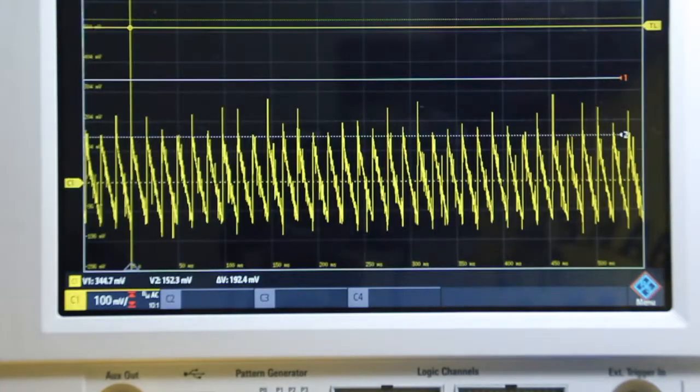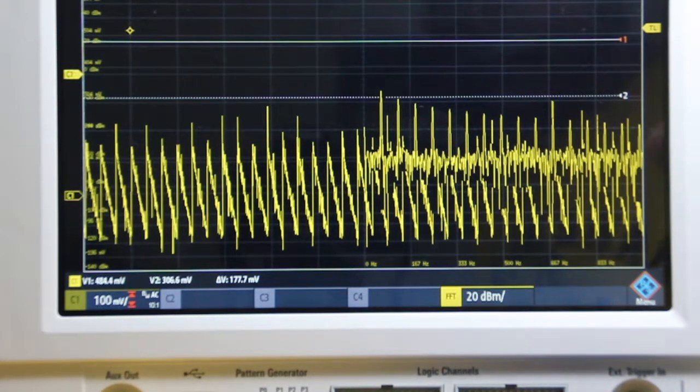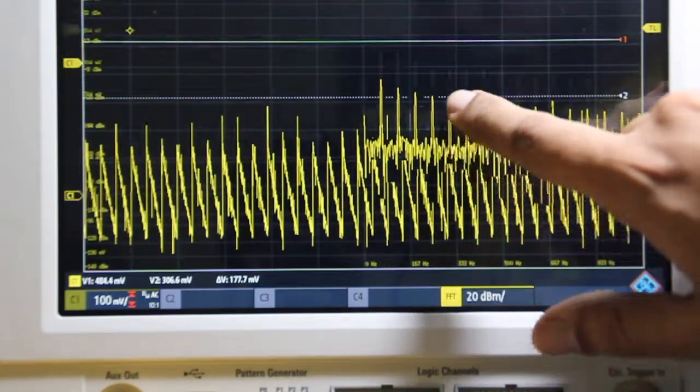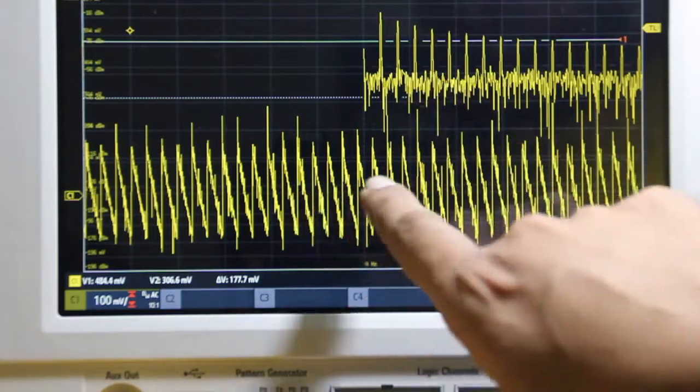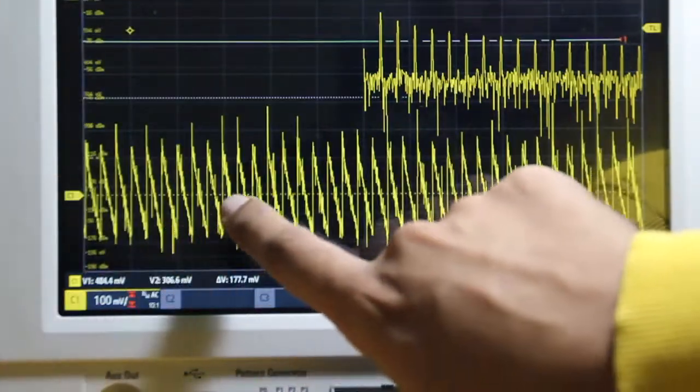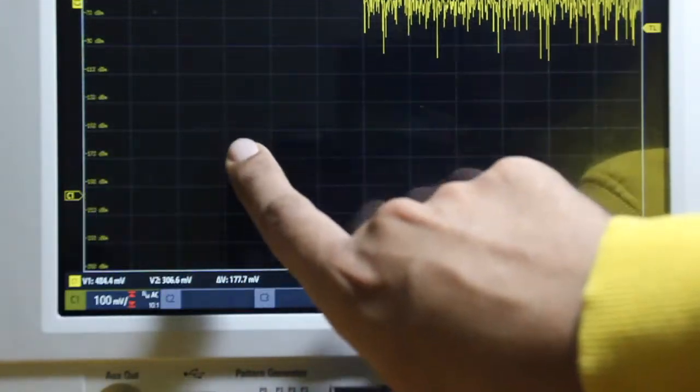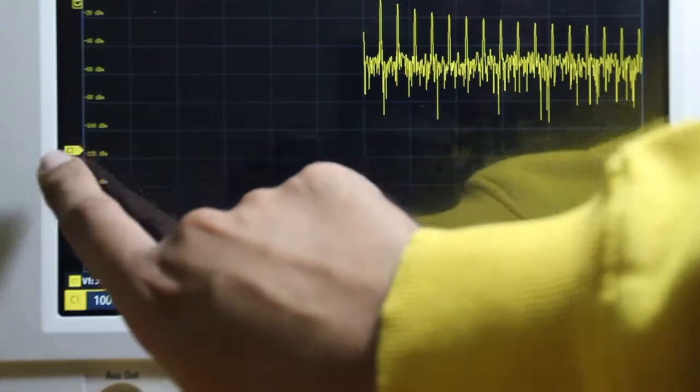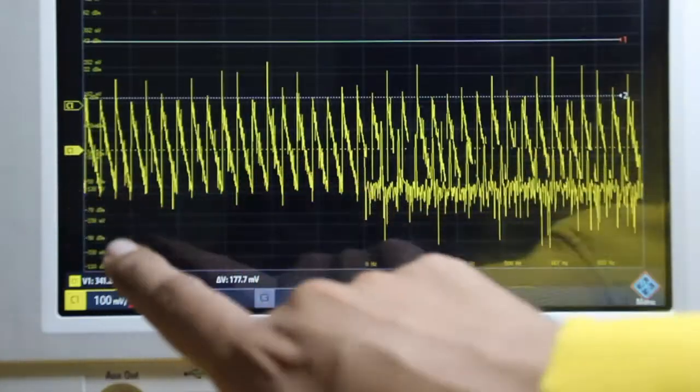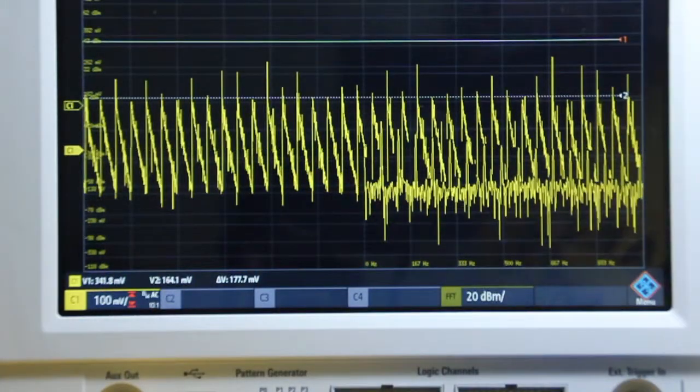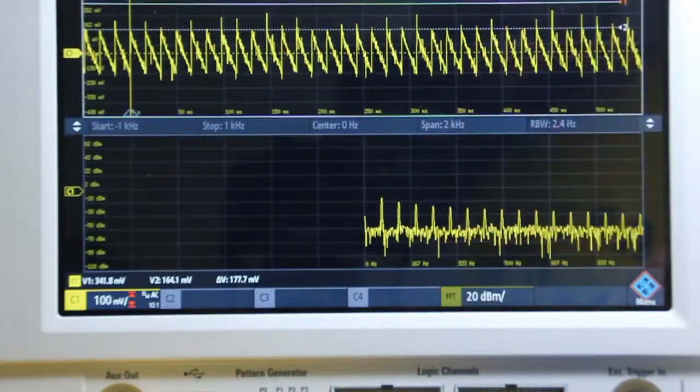You can see this is the signal itself and this is the signal, and this is the Fourier transform overlapped onto each other. I don't know if this is a bug or a feature, but whatever you think. Now they get separated and so on and so forth.